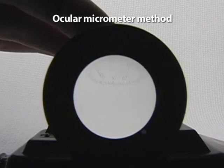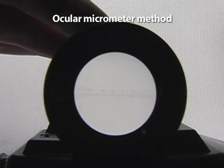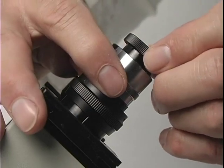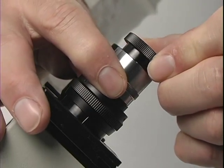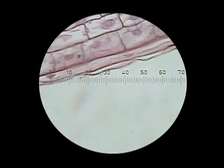The ocular micrometer method uses an etched piece of glass that is inserted into an ocular lens. Such an ocular lens often has a focusing mechanism to allow one to see clearly the ocular micrometer as well as the microscopic image of the object being viewed.